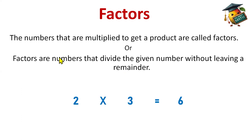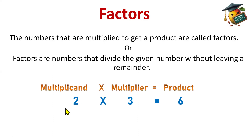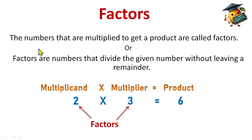Let's see an example. We have 2 multiplied by 3 — 2 threes are 6. Here, 2 is the multiplicand, 3 is the multiplier, and 6 is the product. So 2 and 3 are the factors. The multiplicand and multiplier are called the factors. The numbers that are multiplied to get a product are called factors — this multiplicand and multiplier are those numbers, these are the factors.